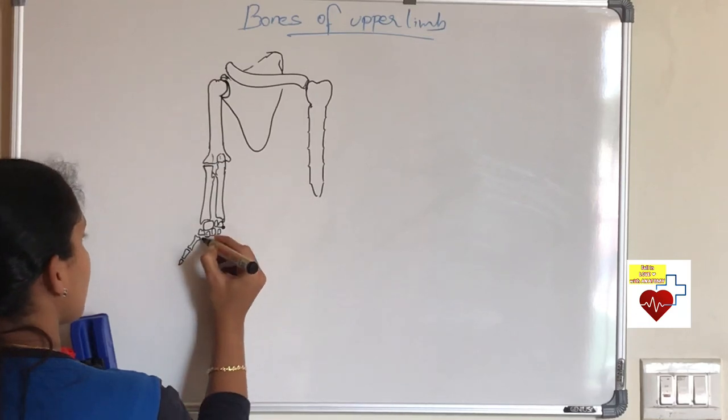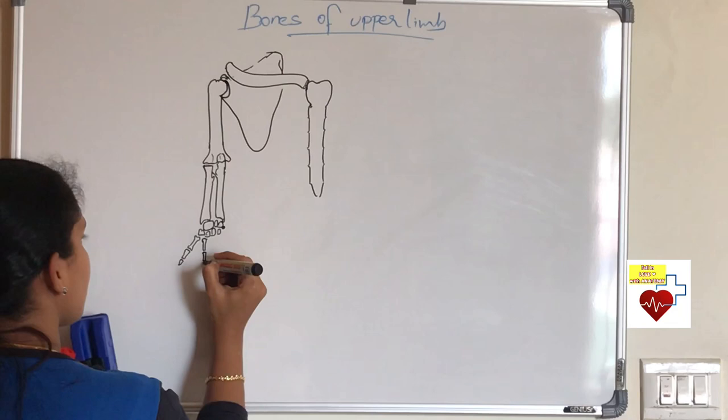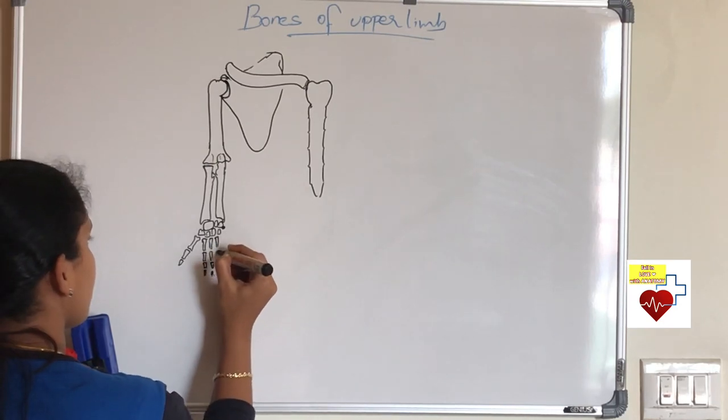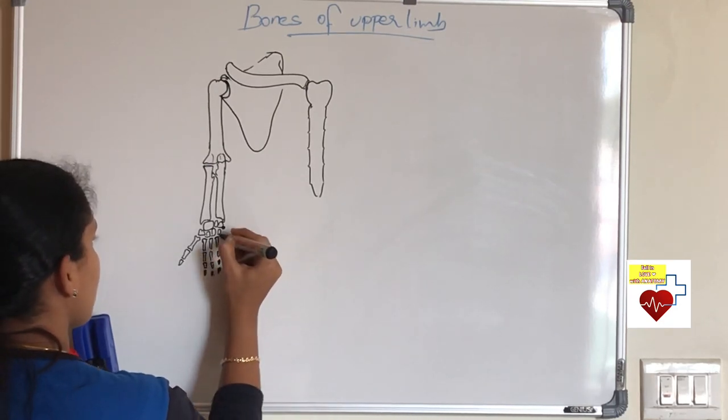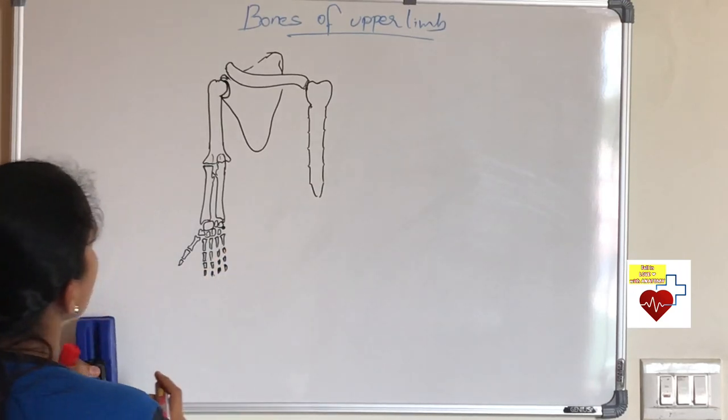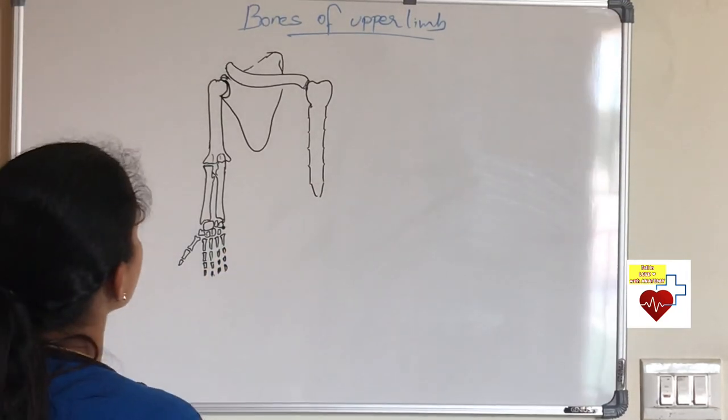They are eight in number and these carpal bones articulate with five metacarpals. They are short long bones. And these five metacarpals articulate with smaller bones called phalanges. You should know there are only two phalanges in thumb and three in rest of the four fingers.